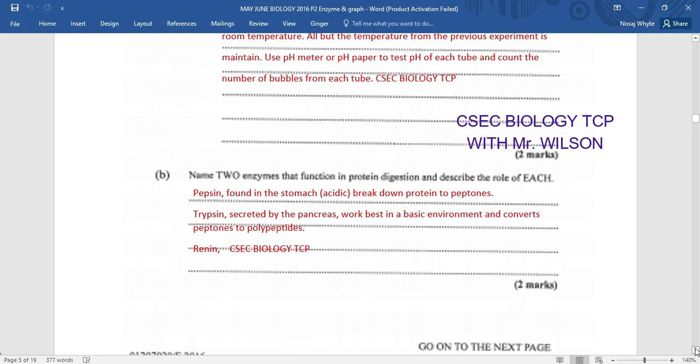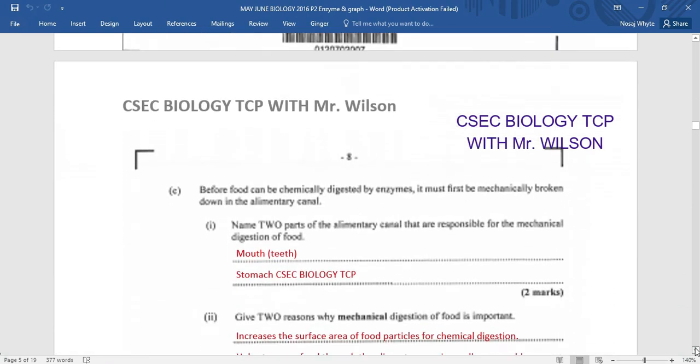We're supposed to name two enzymes that function in protein digestion and describe the role of each. Now we could think readily about pepsin. Pepsin is of course found in the stomach. It is an acidic environment. And pepsin breaks down protein into peptones. Then another enzyme we could think about is renin. And of course, renin is working in an acidic environment as it is found in the stomach. We're going to be finding trypsin, which is of course secreted by the pancreas. So what I want you to do is to tell me in the chat, what is the substrate for renin?